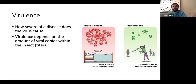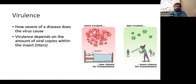There is also virulence — basically how severe a disease a virus causes, which can vary between species. One species of virus might give an insect a very mild disease while another causes a very deadly disease. Virulence also depends on the number of viral copies in the insect. Few copies may cause little disease, but many copies make the disease much more severe.